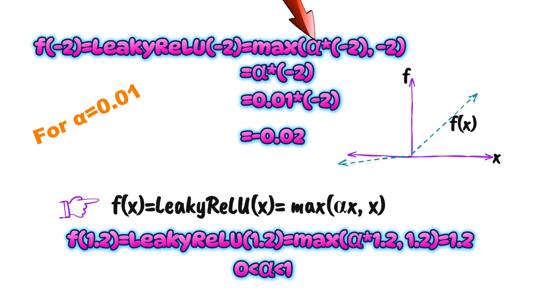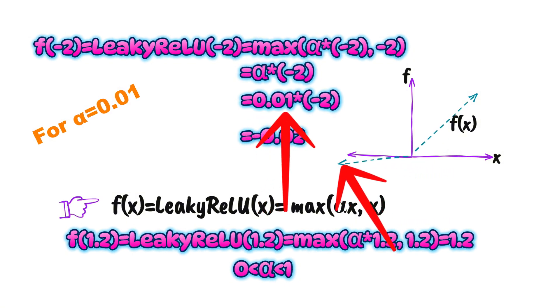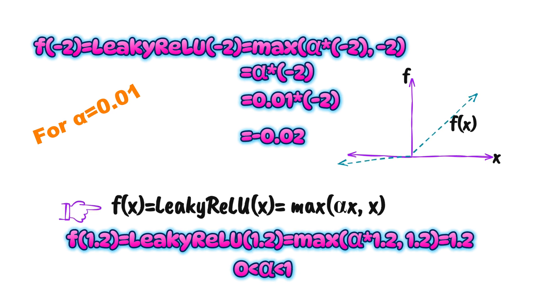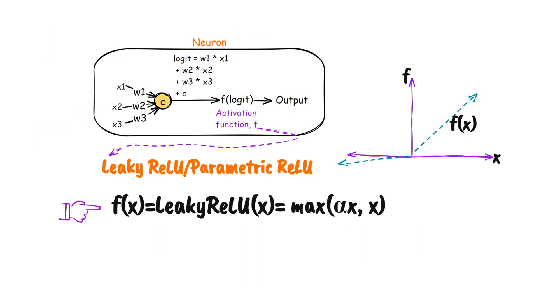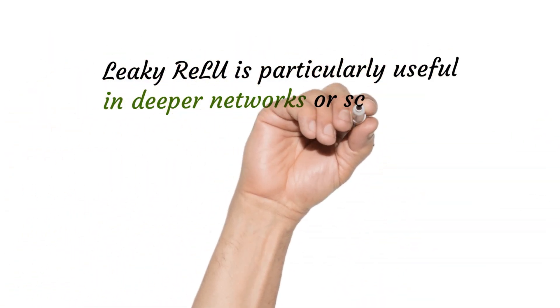This multiplication by alpha ensures that something is returned for negative inputs. The output value is a fraction of the negative input, ensuring that the neuron does not completely die even when the input is negative. This prevents the dying ReLU problem because it allows for a small, non-zero gradient when the input is negative, keeping the neuron alive and capable of learning during backpropagation.